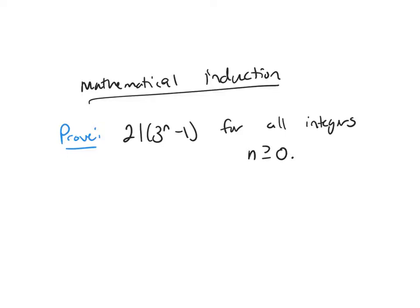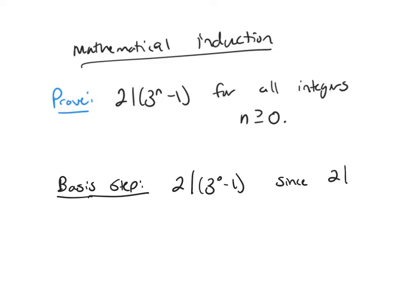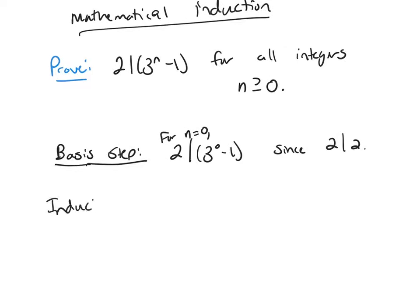For induction, there are two parts: the basis step, where you prove it's true for an initial value. Here the initial value is n equals 0. So 2 divides 3 to the 0 minus 1, because 2 divides 2. So the statement is true when n equals 0.